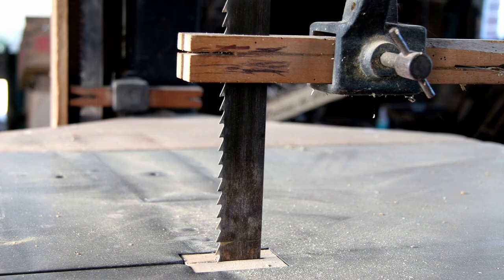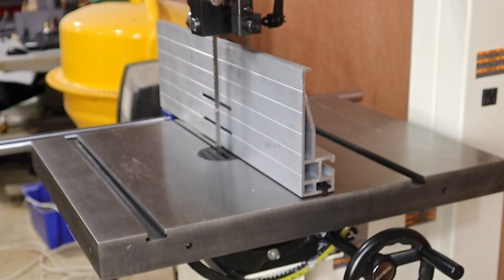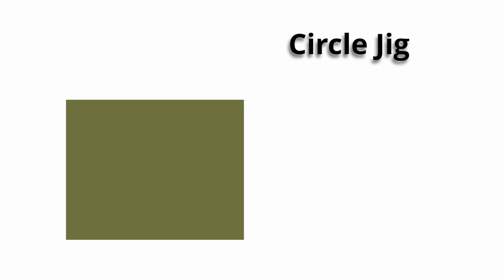You can make this jig for almost any bandsaw. All you really need is a fence or a nice straight edge that's parallel to the blade. The idea is you cut a slot in a nice flat piece of wood then you can drill a bunch of holes at various distances from the slot and this will allow you to make circles of many sizes.